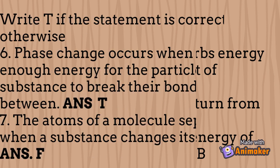Write T if the statement is correct, F if otherwise. Number 6: Phase change occurs when there is enough energy for the particles in a substance to break their bonds in between. Answer: True. Number 7: The atoms of a molecule separate when a substance changes its phase. Answer: False.